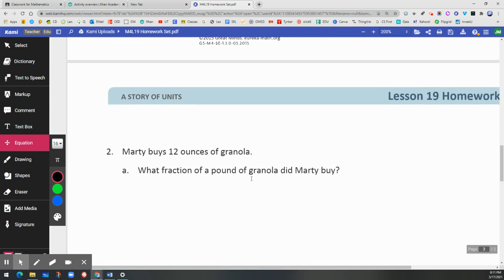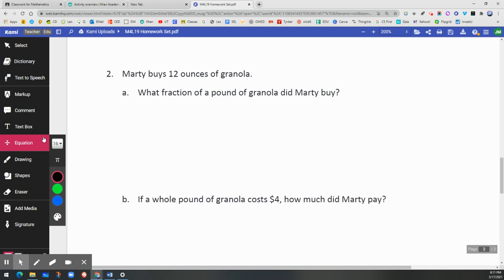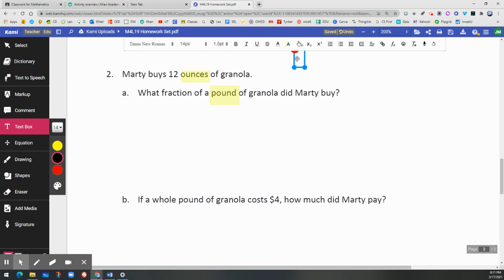Now let me show you another problem, but this one is going to be a word problem. Your first step is to identify the units. So we're going to find on this one, it says Marty buys 12 ounces of granola. And the question is asking you what fraction of a pound, here is the other unit, of granola did Marty buy? So we have to convert ounces into pounds. And again, you have to remember this information. If you don't have it, find the resource, Google it, whatever you need to do.